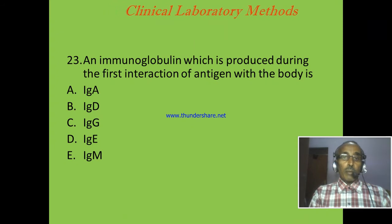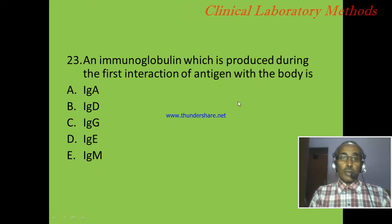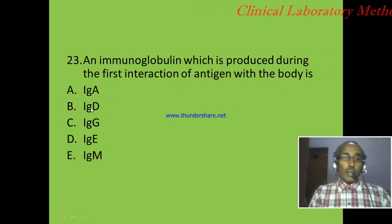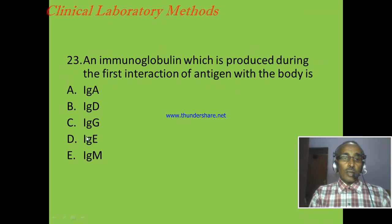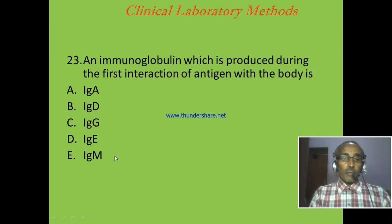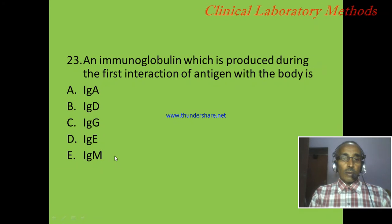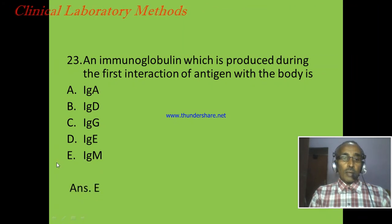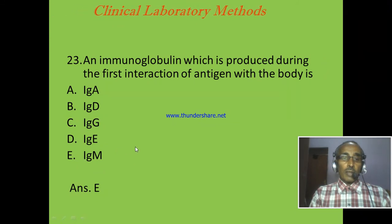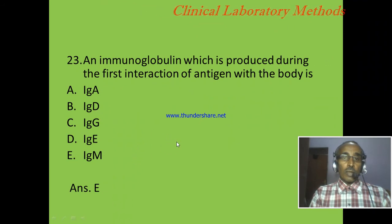Question 23: An immunoglobulin which is produced during the first interaction of antigen with the body is — A: IgA, B: IgD, C: IgG, D: IgE, E: IgM. The correct answer is E: IgM. IgM is the first, primary, and largest antibody produced during the first interaction of an antigen or microorganism with the body.